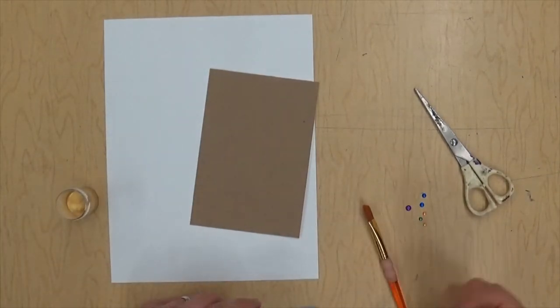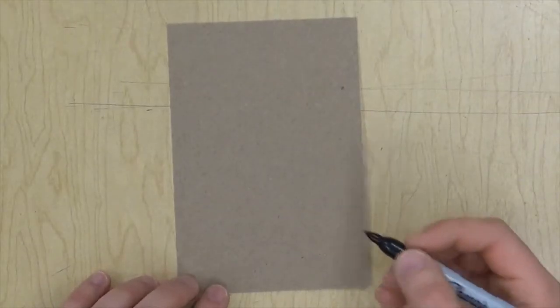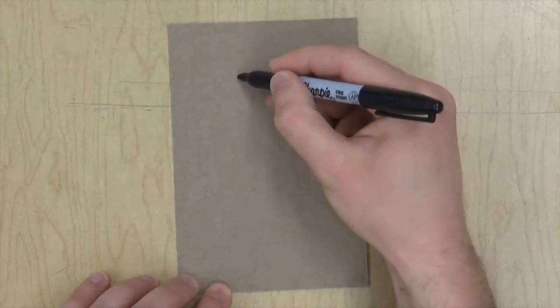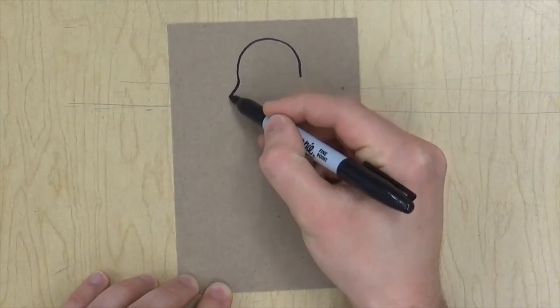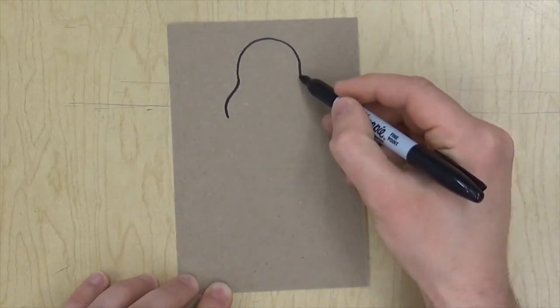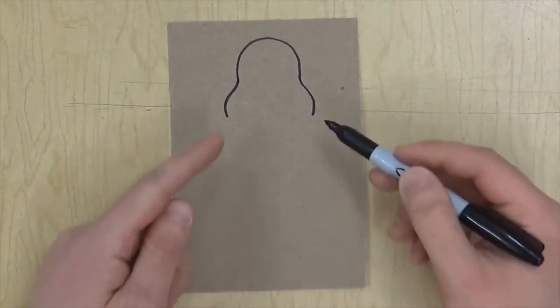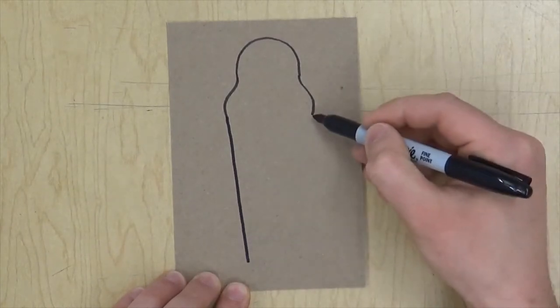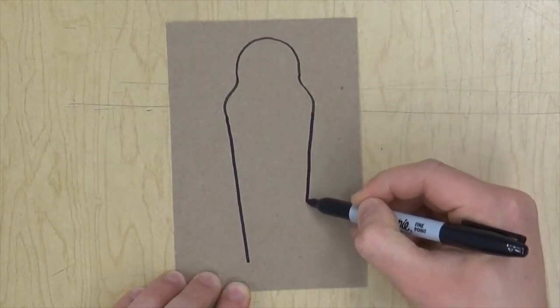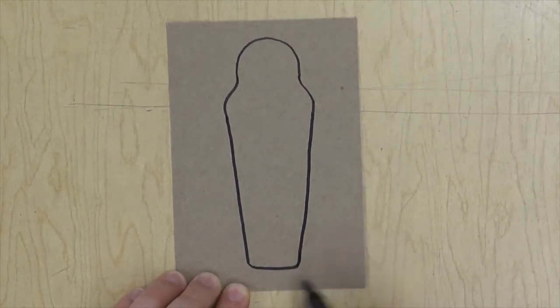I'm going to start by outlining the sarcophagus. The sarcophagus is basically shaped like a person, so it's going to be round at the top like half a circle. Then you're going to curve around, almost like an S for the shoulders. The sides are going to go down but go in a little bit, so it gets smaller where the feet would be. Then you can round it off and make it flat at the bottom.